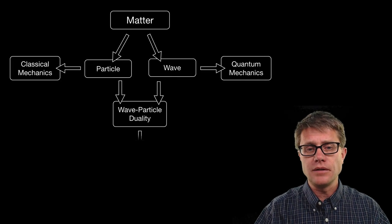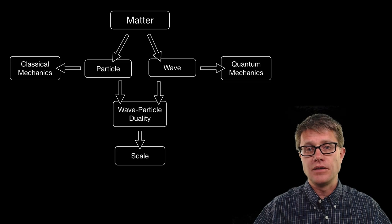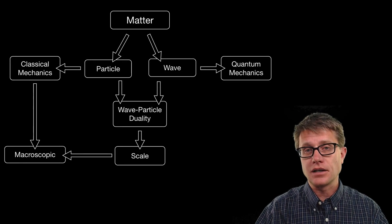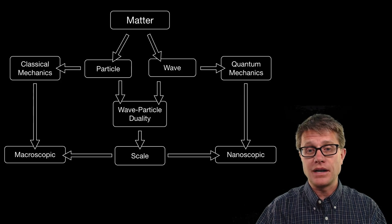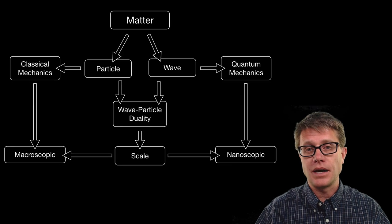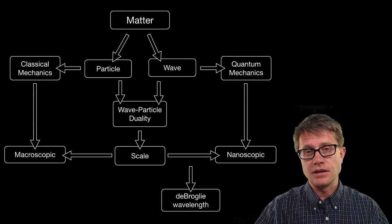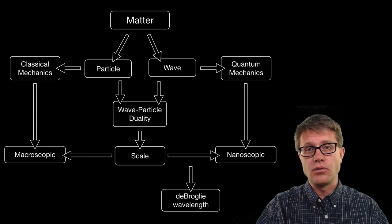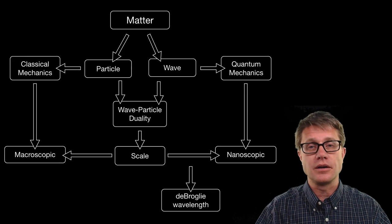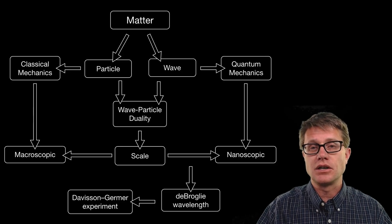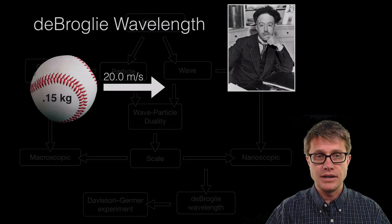But which world should we live in all depends on scale. If it is large, we call that classical mechanics. And if it is very, very small, nanoscopic, that is the world of quantum mechanics. And de Broglie's wavelength is kind of a determiner of which area we should be along this continuum. And then the Davison-Germer experiment showed that he was actually right.